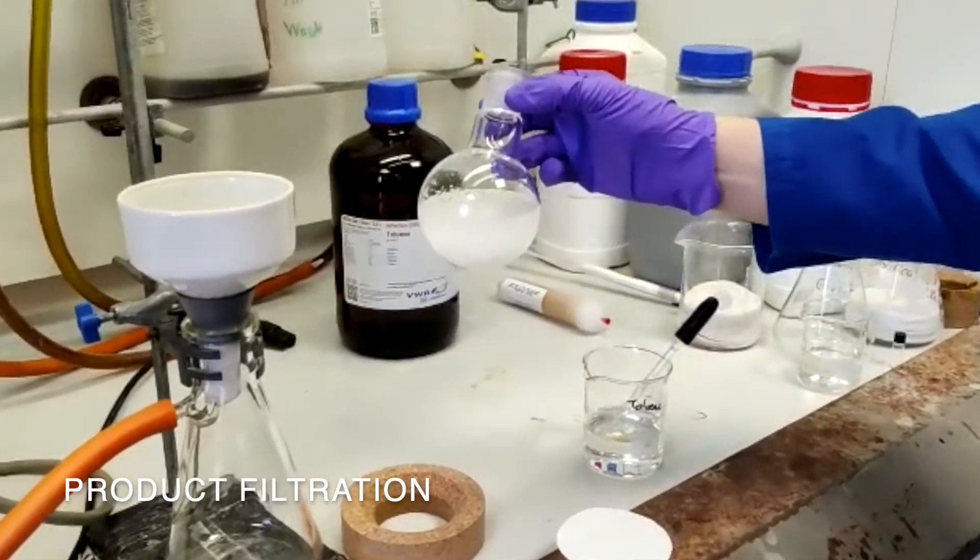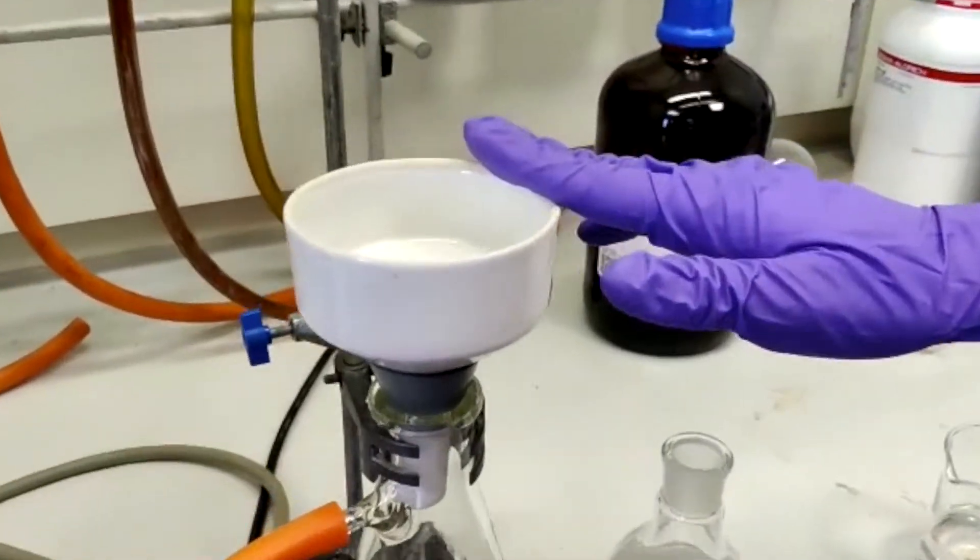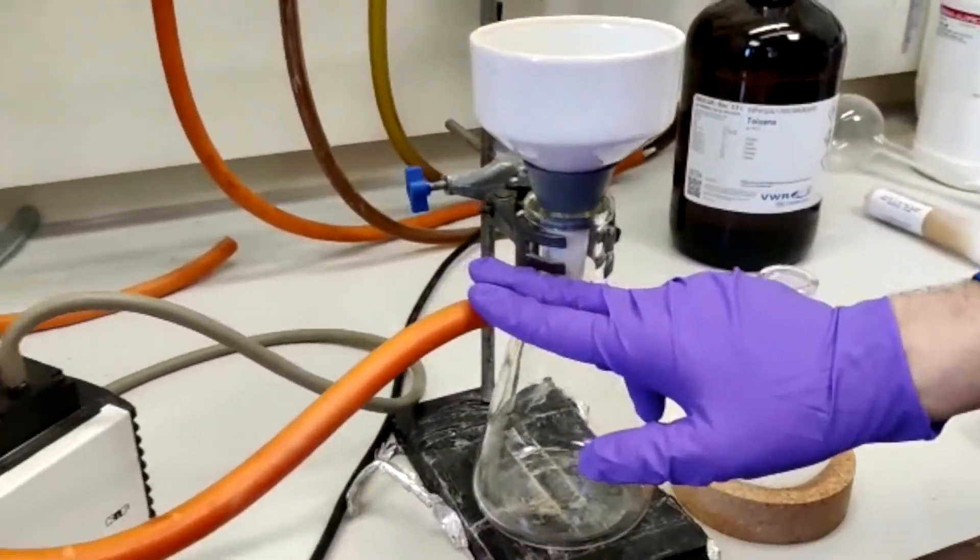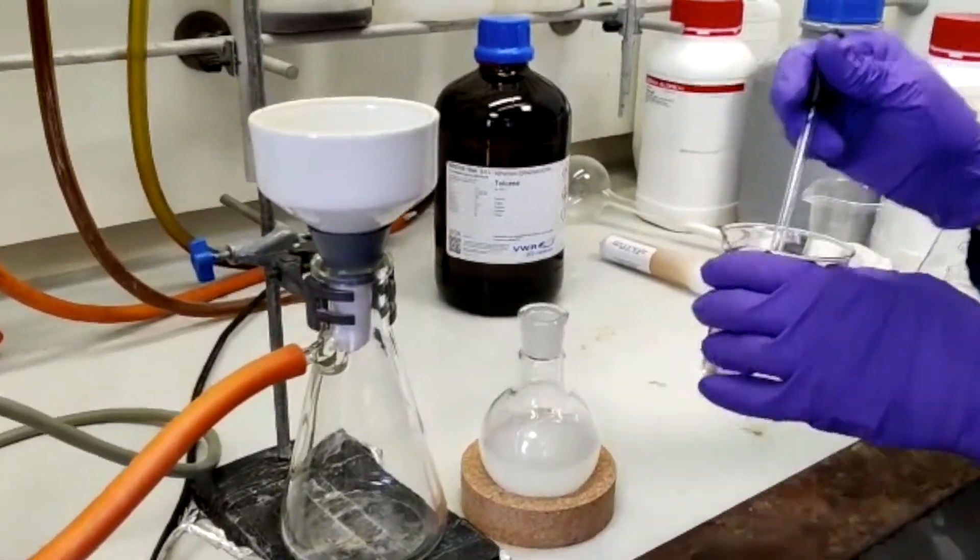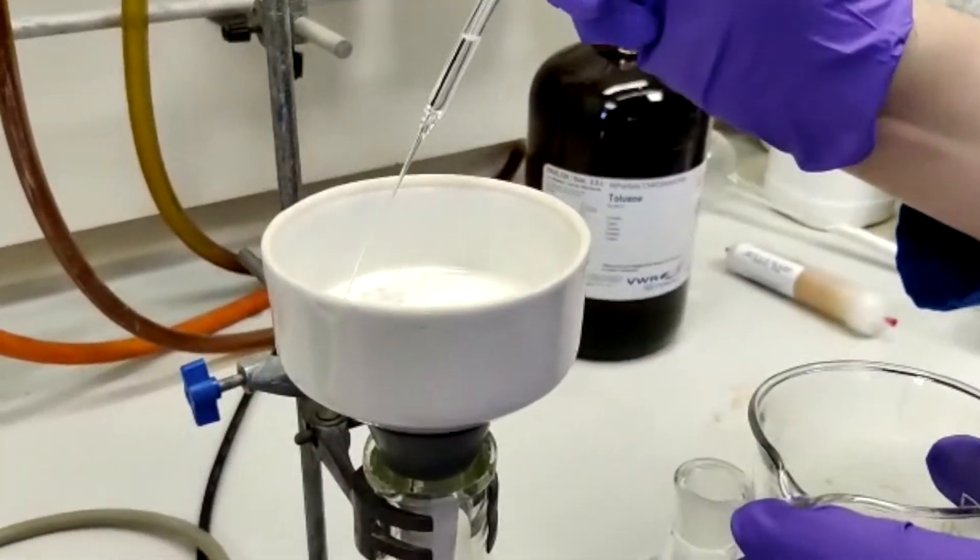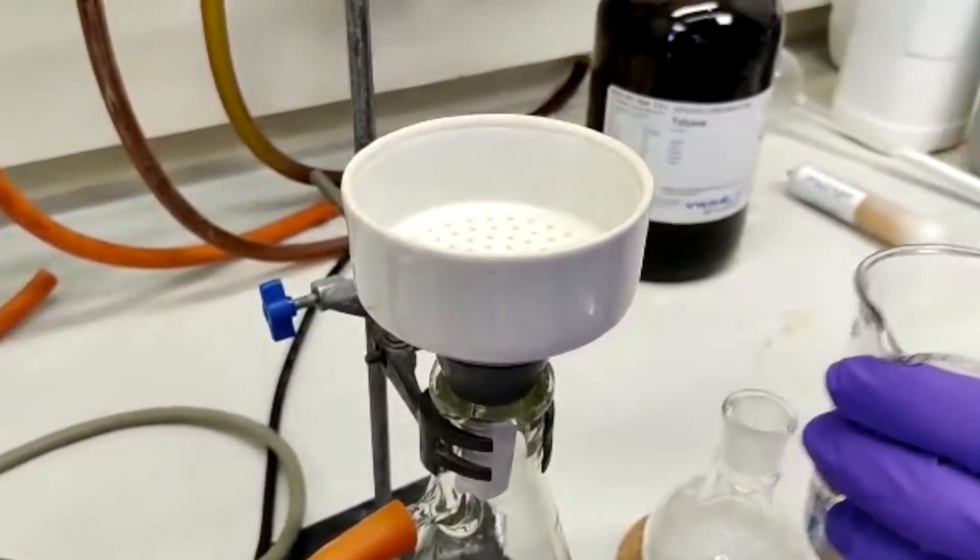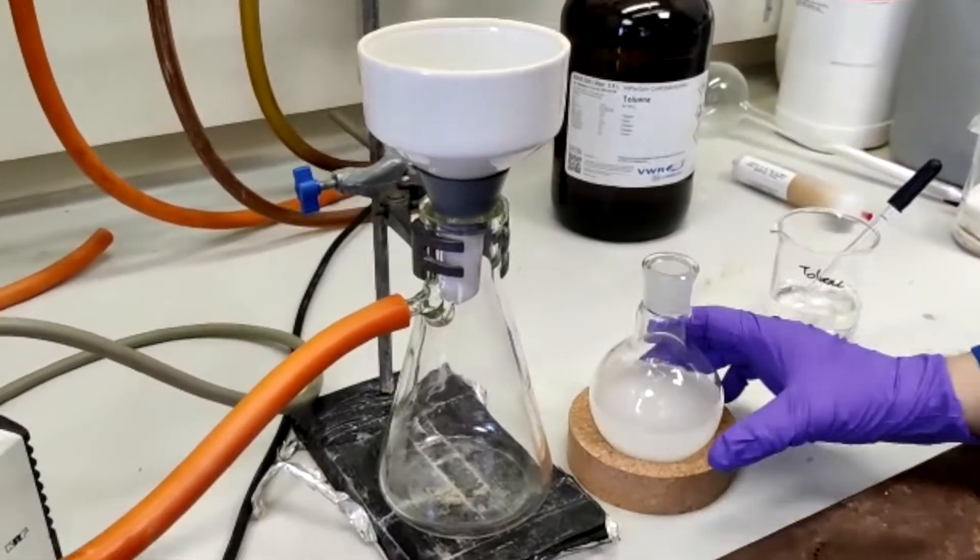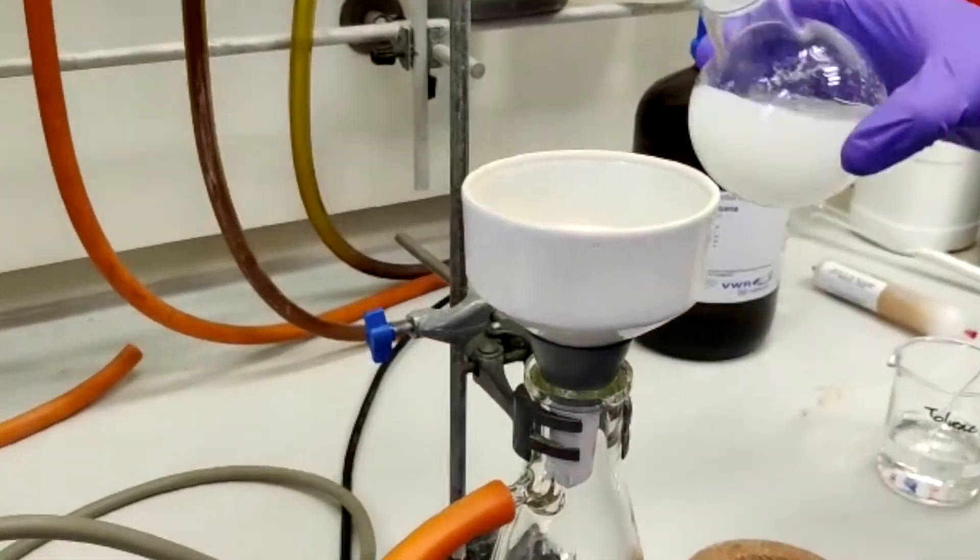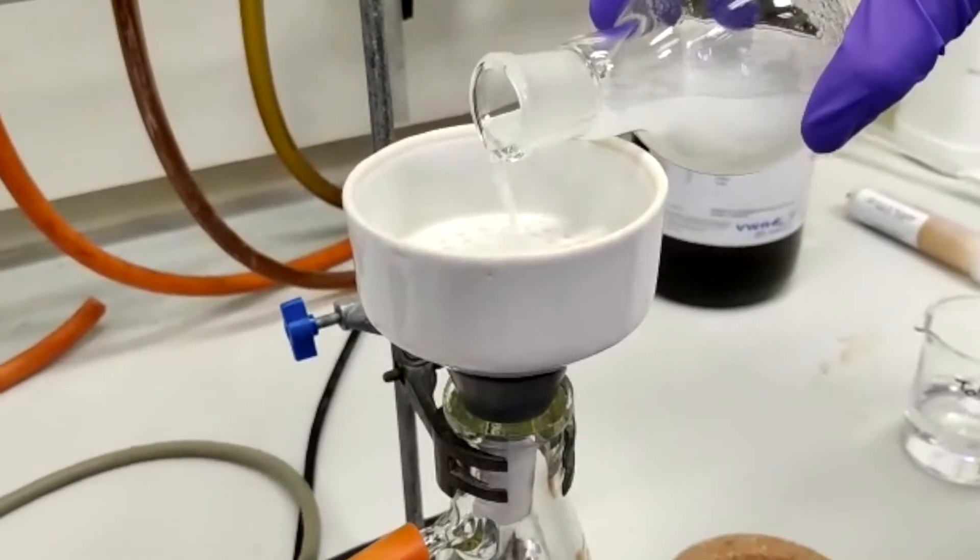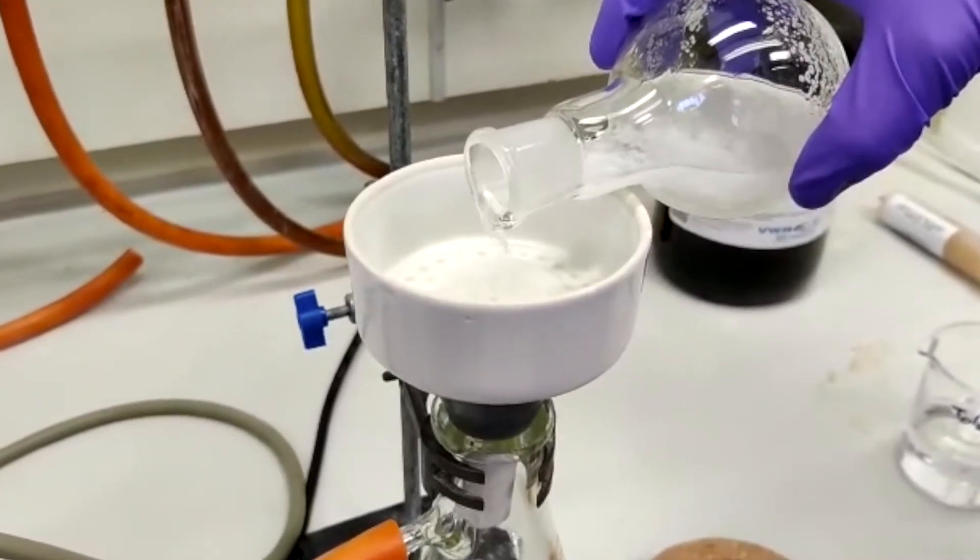So we've removed the stir bar from our product and we're now going to filter this recrystallized product. You'll need a filter paper, which you place inside a Buchner funnel, which is attached to a Buchner flask and a vacuum system. We're also going to need some toluene to wet our filter paper and rinse our product. What you want to do is lightly wet the filter paper on your Buchner funnel. We use toluene as our product is not soluble in toluene. We'll then briefly switch on our vacuum. Give the product a swirl. You gently pour your product into the center of the filter paper, making sure not to disturb it.